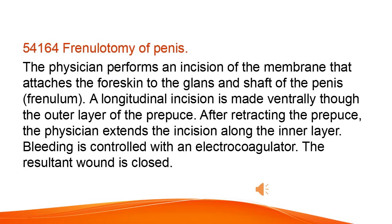Vesiculotomy of penis. The physician performs an incision of the membrane that attaches the foreskin to the glans and shaft of the penis, the frenulum. A longitudinal incision is made ventrally through the outer layer of the prepuce. After retracting the prepuce, the physician extends the incision along the inner layer. Bleeding is controlled with an electrocoagulator and the resultant wound is closed.